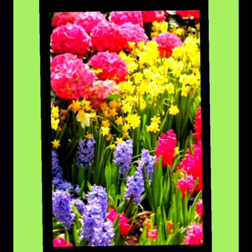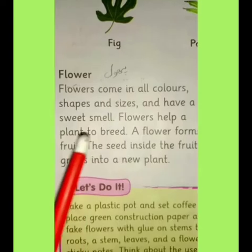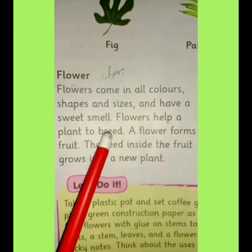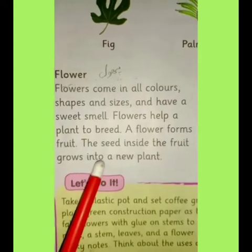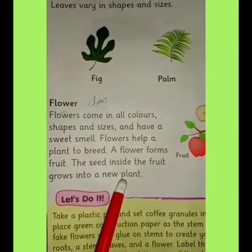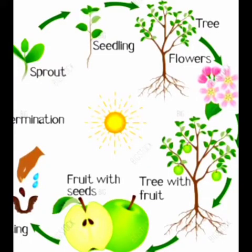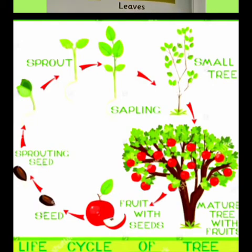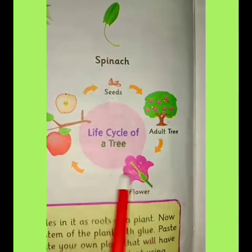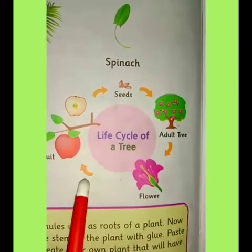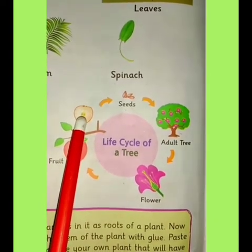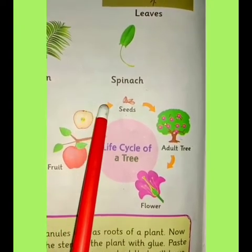Flowers have a sweet smell and help a plant to reproduce. A flower forms fruit, and the seed inside the fruit grows into a new plant. This is the life cycle of the plant: first a seed is planted, then a small plant grows, then the plant produces a flower, then a fruit, and the fruit contains a seed which can grow into a new plant again.